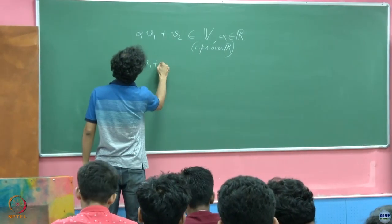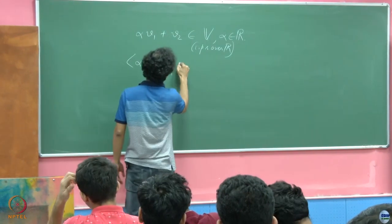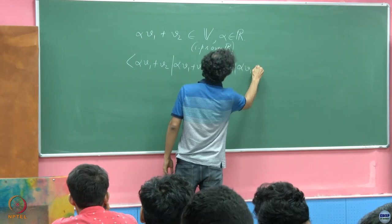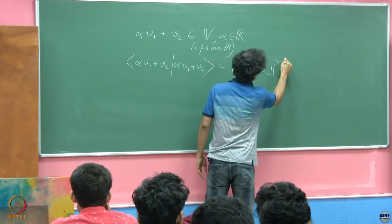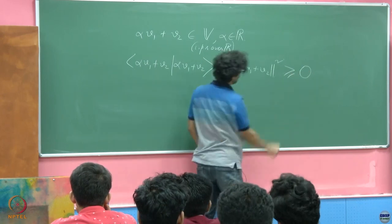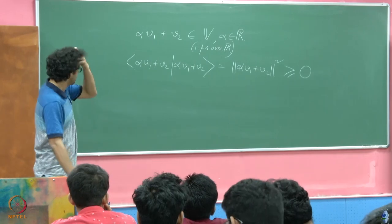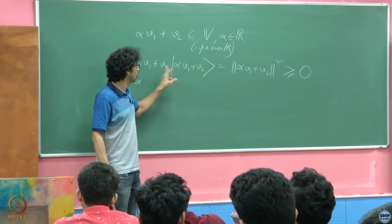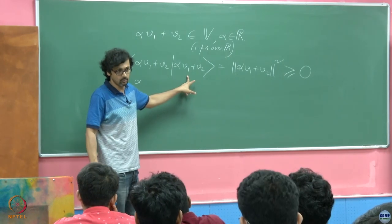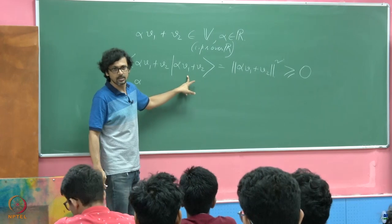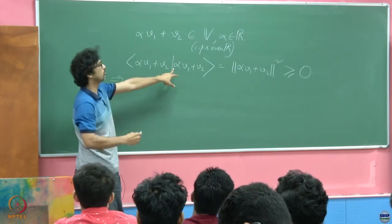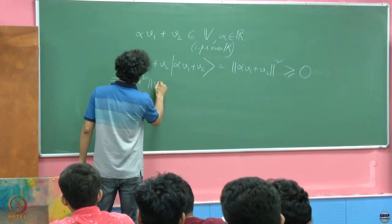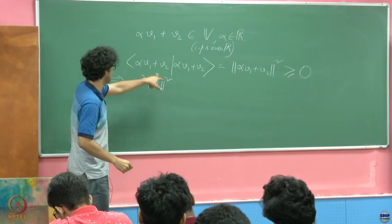What can we say about this? Alpha V1 plus V2 inner with itself is nothing but the norm of alpha V1 plus V2 squared, which by its definition is positive definite. Now let's try and open this up. Remember now this is real. This is alpha squared norm of V1 squared plus